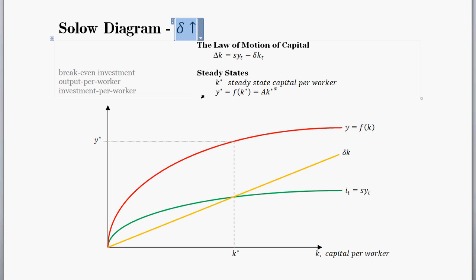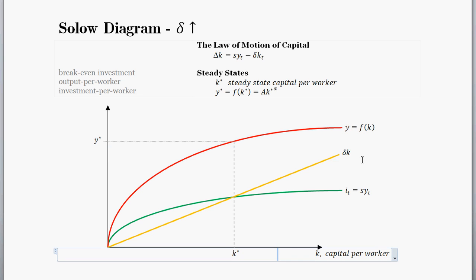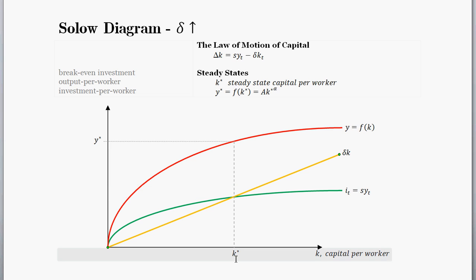So how does that affect the model? Let's look at the Solow diagram to see how that changes our steady state values. Where is delta? Delta is on the yellow line, which is our break-even investment line. This line tells you that given any value of capital per worker, the yellow line tells you the amount of capital per worker required in order to keep capital per worker constant from one period to the next. If the investment rate equals that break-even investment rate, you have the steady state capital per worker.